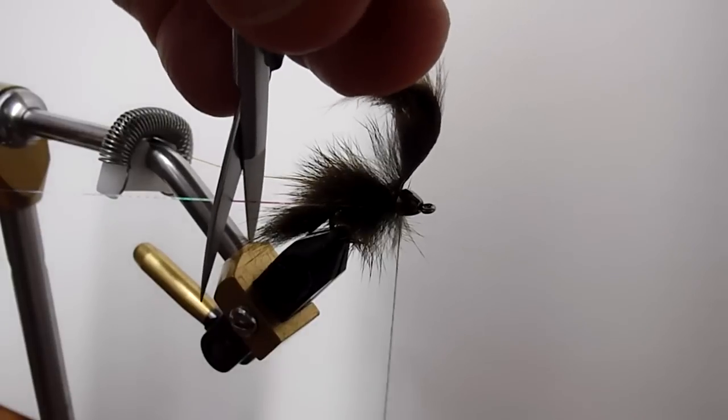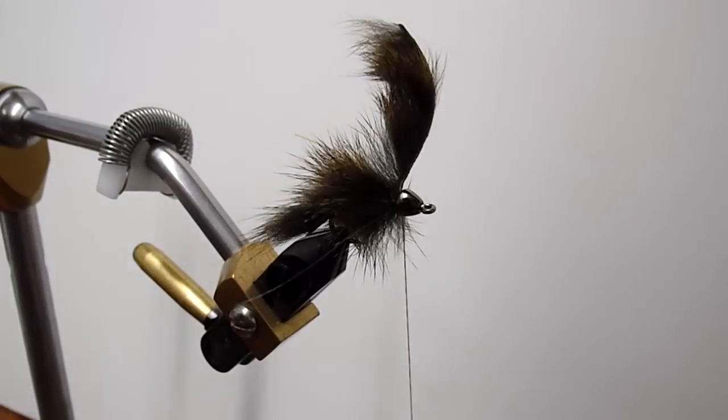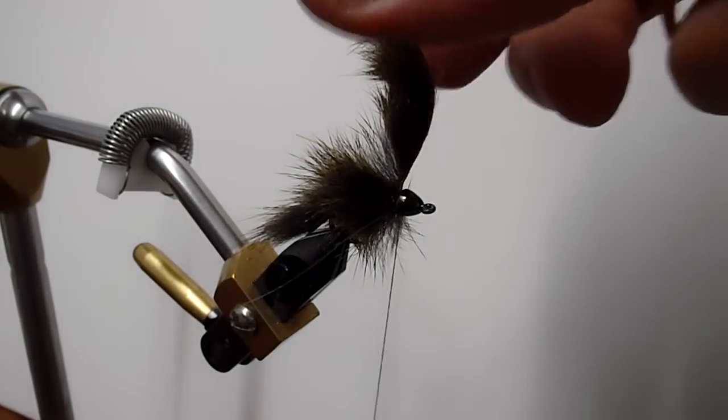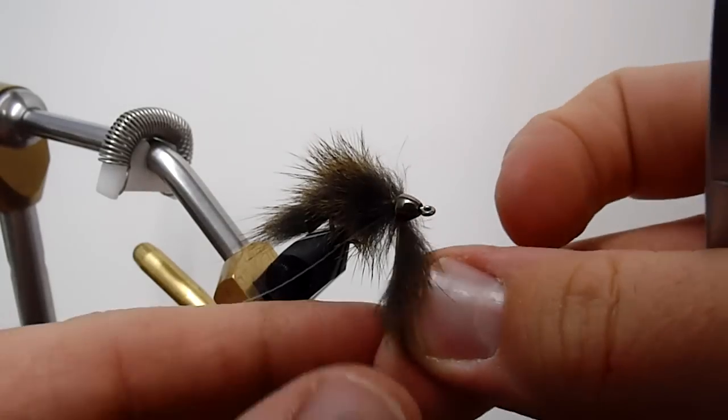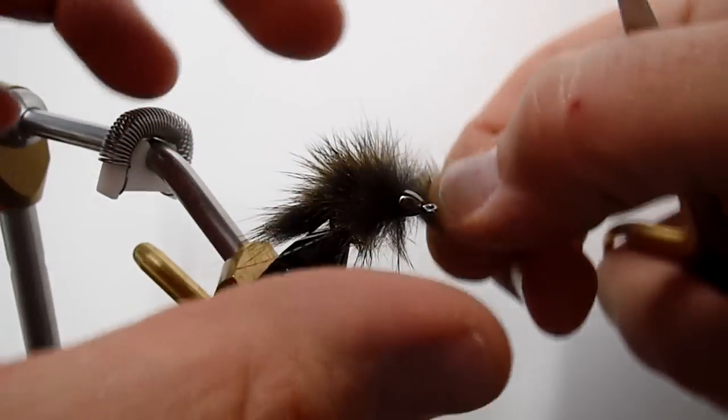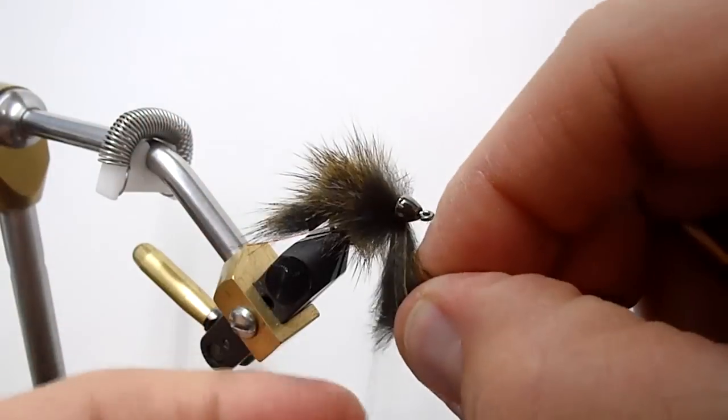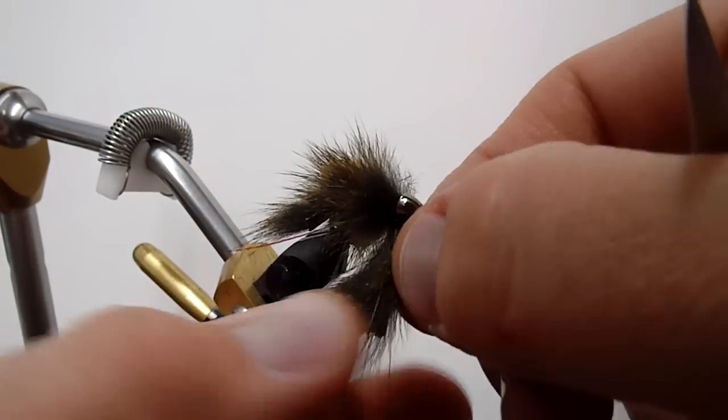You can come in, measure this out to about the length of your leech, trim it off. The final step here is just going to be to take this and make one more wrap with that pine squirrel to kind of cover everything up and butt it up right against the cone.